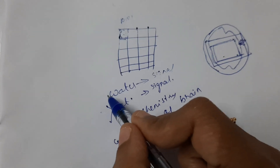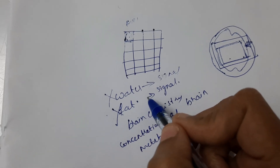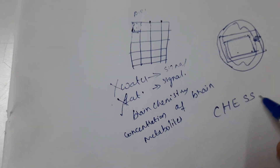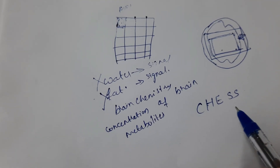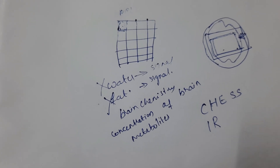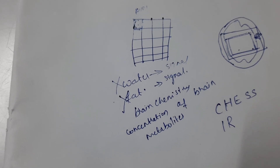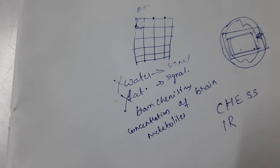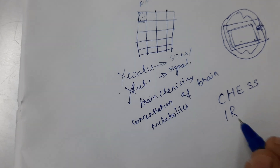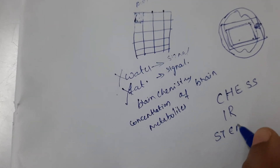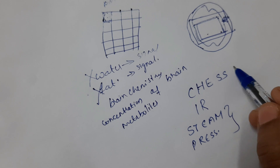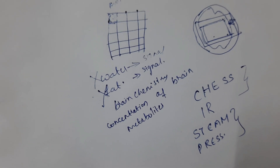Fat is suppressed. Now we have to suppress the water signal. In order to perform water suppression, we use two techniques. The first one is known as CHESS — Chemical Shift Selective technique — or we can perform an IR technique, inversion recovery technique. These two techniques are used in order to suppress the signals from water. These suppression techniques are used with two types of pulse sequences, namely STEAM and PRESS.